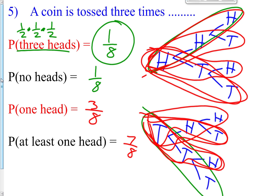That's your lesson on AND and OR probability. When it's OR probability, you add the two probabilities and subtract the overlap. When it's AND probability, you multiply the two probabilities together. Let me know if you have any questions when you get to class tomorrow.